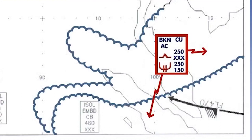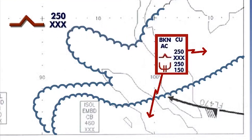In our example here, the cloud text box points to two scalloped cloud areas and indicates that broken amounts of cumulus and altocumulus are forecast within these regions. Between flight levels 250 and below flight level 100, which is the lower range of the chart, moderate turbulence can be expected. And between flight levels 250 and 150, moderate icing can be expected.